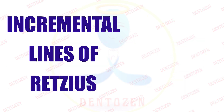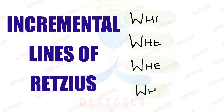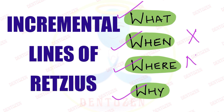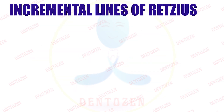To write your answer on incremental lines of Retzius, you need to cover four things: what are these lines, when are they seen, where in the enamel are they seen, why are they seen, and what is the neonatal line.